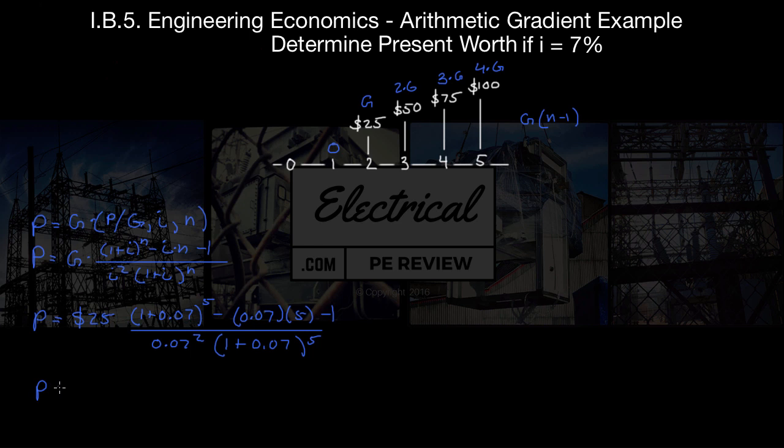So we plug this in our calculator. We come up with our present worth value equals 25 times 7.6467. And we punch this in. And when we come up with our total present worth is going to be equal to $191.